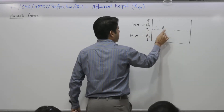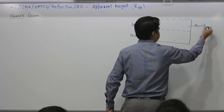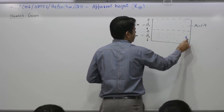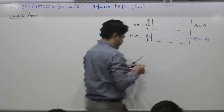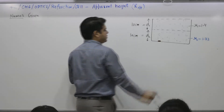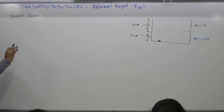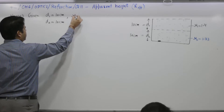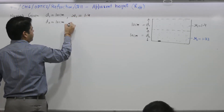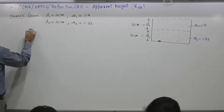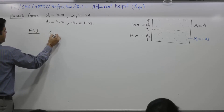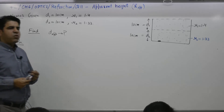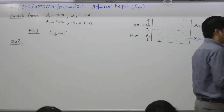Given: D1 is 10 centimeters with refractive index nu-1 = 1.4 (oil), and D2 is 10 centimeters with nu-2 = 1.33 (water). Suppose there is a coin at the bottom. Actual depth is 20 centimeters. We need to find D-apparent. The formula to use is D-apparent equals D divided by nu.